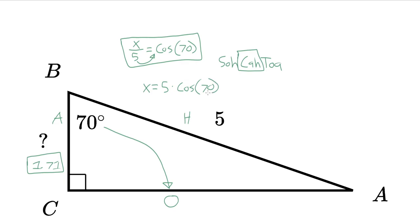So X equals 5 times the cos of 70 — that is the simplified answer. Stick this in your calculator and you'll get 1.71 rounding to the nearest hundredth. That is how you solve for a side in right triangles. I hope you found this video helpful, informative, and exciting. Thank you very much for watching, and I'll see you in the next one.